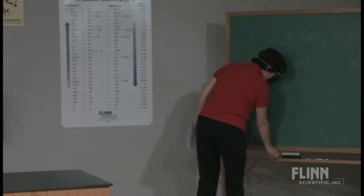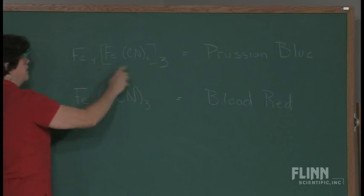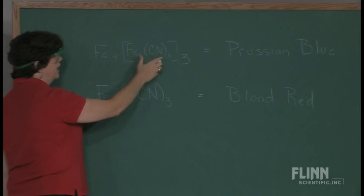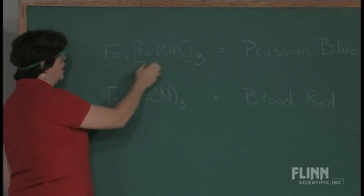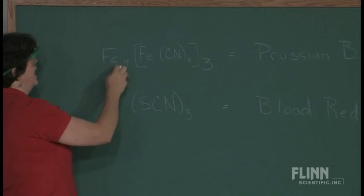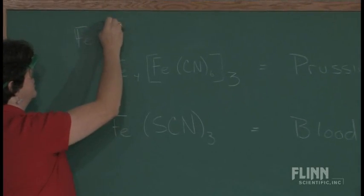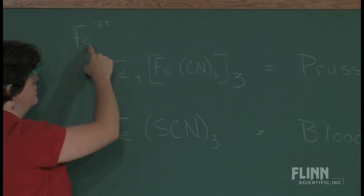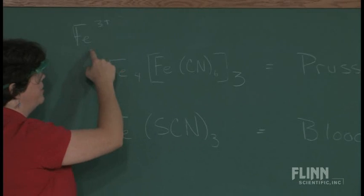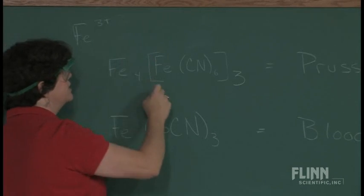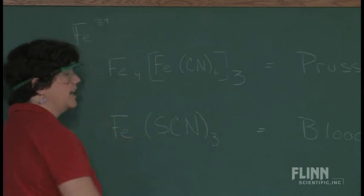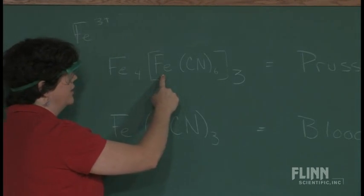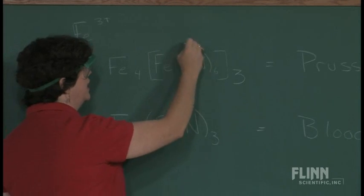The Prussian blue color comes from this compound right here, which is a complex ion of iron and six cyanides attached to another iron ion. And this iron ion was the three plus ion. So we have a total of four three plus ions, giving us twelve positives. So this complex ion, the three complex ions have to be twelve negatives to make up for that. So let's try to figure out what the oxidation state of the iron is here. We have cyanide, which is negative one.